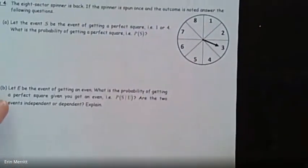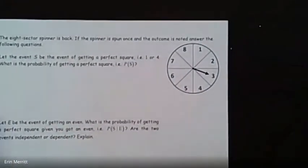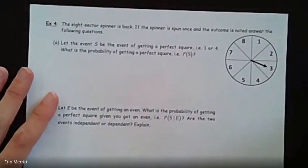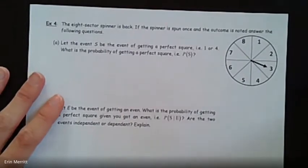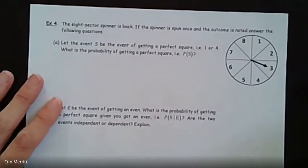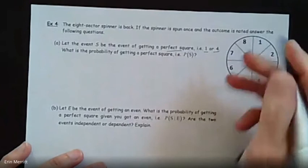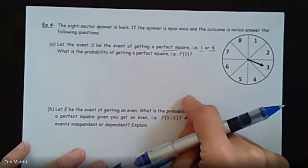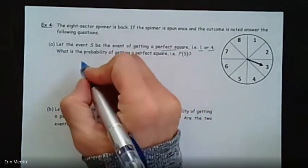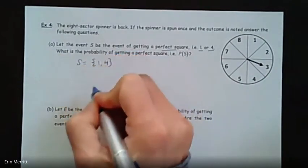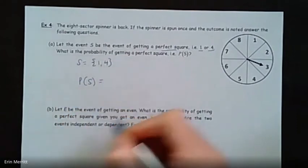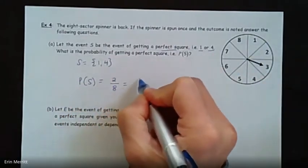Last page — we've got a spinner question and then we're done. You have an eight-sector spinner. Let event S be the event of getting a perfect square. Perfect squares on the spinner would be one and four. The probability of spinning a perfect square: there are two out of eight total, so one-fourth.